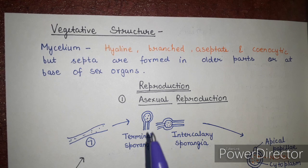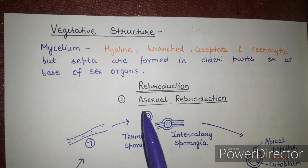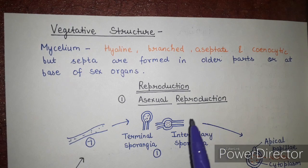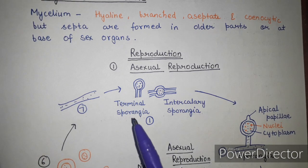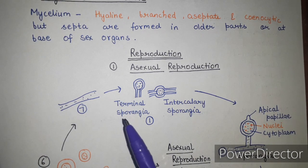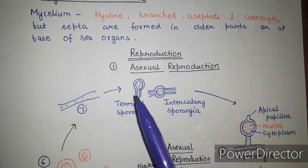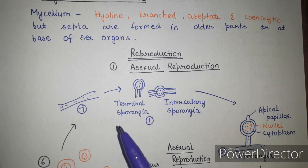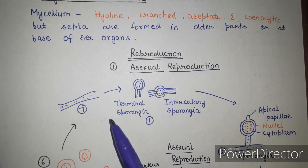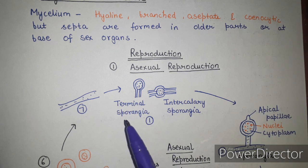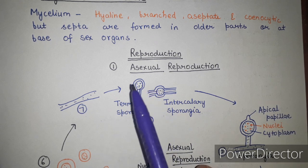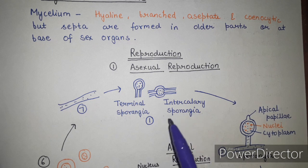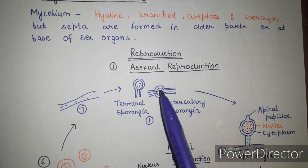Reproduction in Pythium takes place by two types: asexual and sexual. During asexual reproduction, the tip of the hyphae swells and aggregates cytoplasm along with nuclei, giving rise to a structure called the sporangia. The sporangia may be terminal — present at the tip of the hyphae — or intercalary, meaning present in the center or in between.